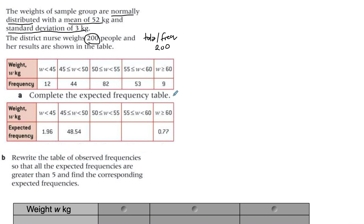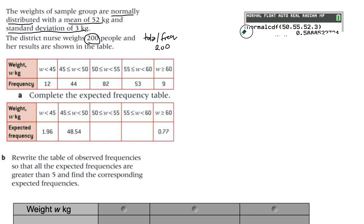An expected frequency table will always follow the same process. Because it's a normal distribution, you're going to use the normal CDF on the calculator to predict how many people will fall between given weight intervals — for example, between 50 and 55. You set the lower bound to 50 and the upper bound to 55, along with the mean and standard deviation, and the calculator gives you the probability.